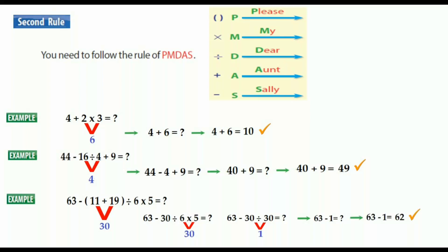63 minus 1 equals 62. That's it! We have explained all things about order of operations. Thanks for watching — see you next lesson.